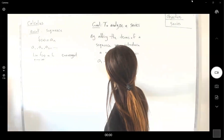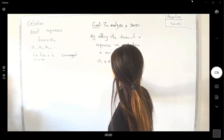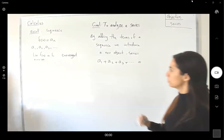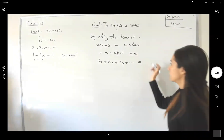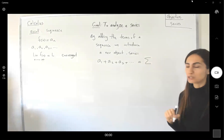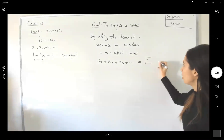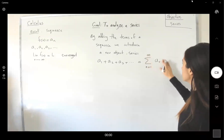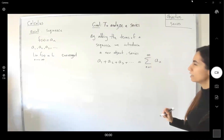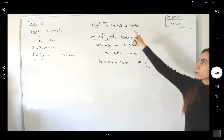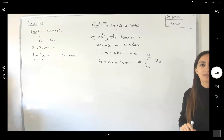A series is a sub 1 plus a sub 2 plus a sub 3 plus the rest of the terms. We use the Greek letter sigma to show summation over the terms a sub n, starting from one and going to infinity. This is an infinite series. Our goal is to analyze a series.